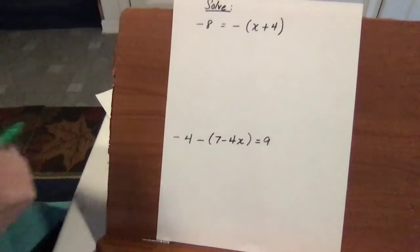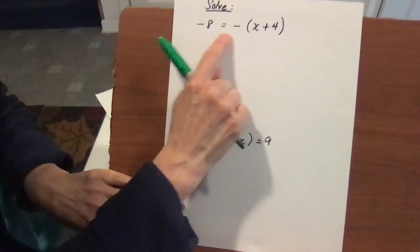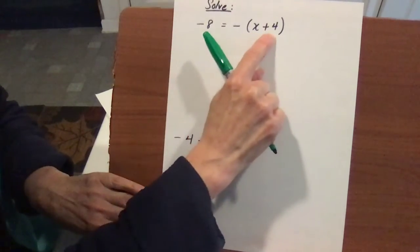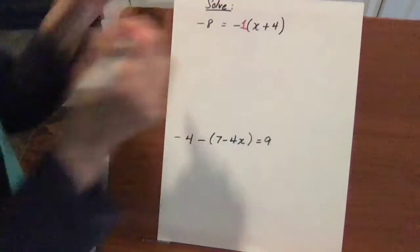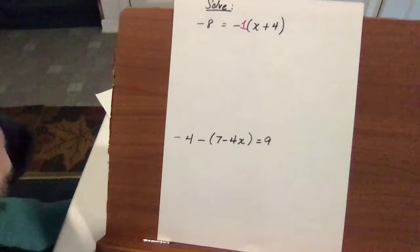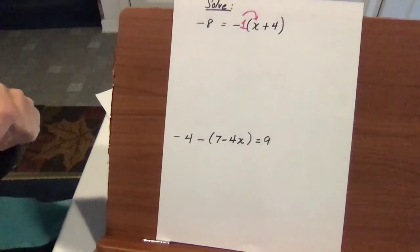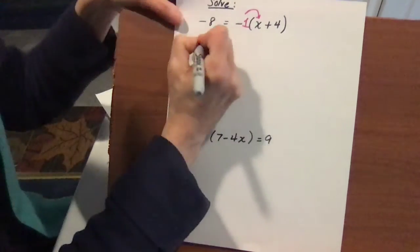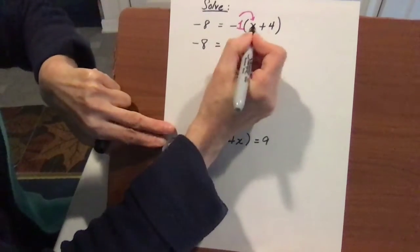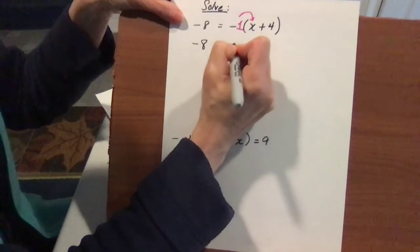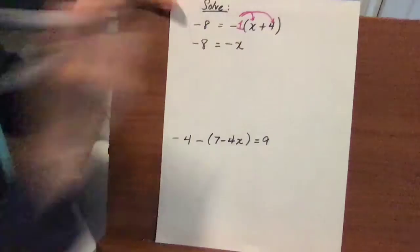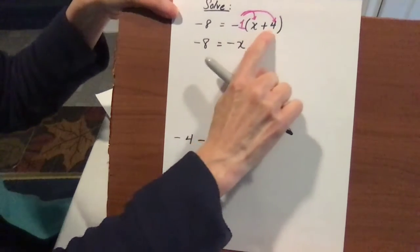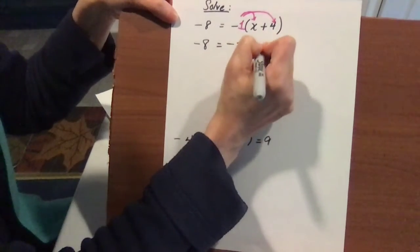Now we're going to introduce the distributive property into equations. We have negative 8 equals negative quantity of x plus 4. Remember, there is a negative 1 in front of the quantity, so the first thing we do is distribute. Negative 1 times x gives negative x, and negative 1 times 4 gives negative 4, so minus 4.